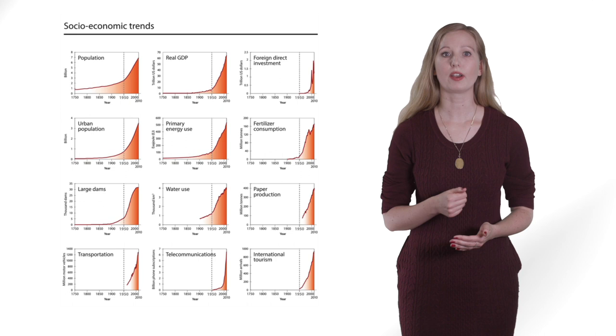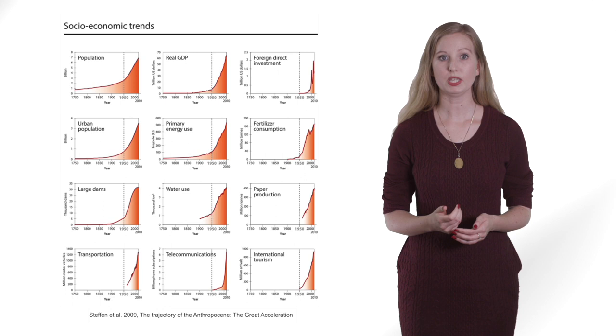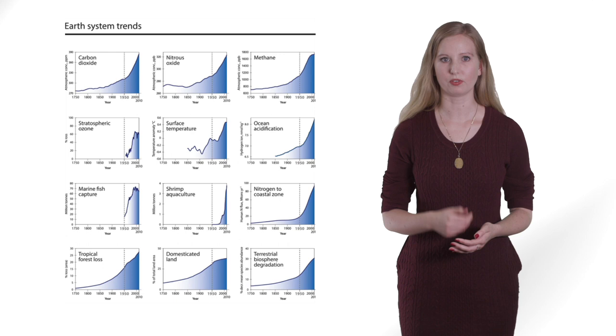The Anthropocene is defined by the great acceleration, social, economic and environmental trends that are exponentially increasing from population or GDP and tourism to carbon dioxide, surface temperature and loss of tropical forest.